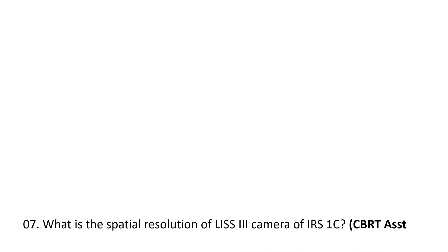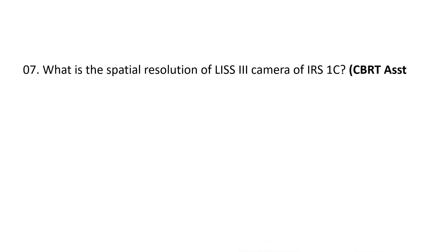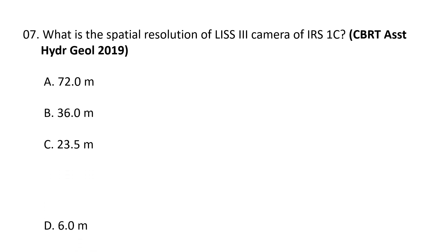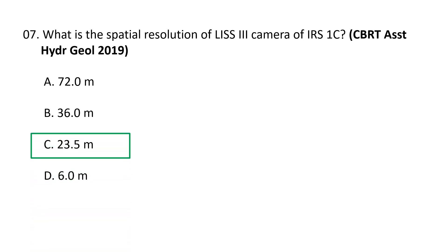Next question: what is the spatial resolution of LISS-3 camera of IRS-1C? Options are: A) 72 meters, B) 36 meters, C) 23.5 meters, and D) 6 meters. The correct answer is C, 23.5 meters. The LISS-3 camera provides multi-spectral data in four bands. The spatial resolution for the visible bands and near-infrared band is 23.5 meters.